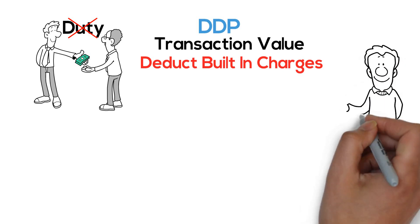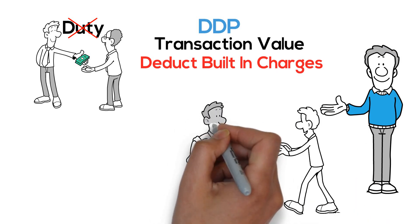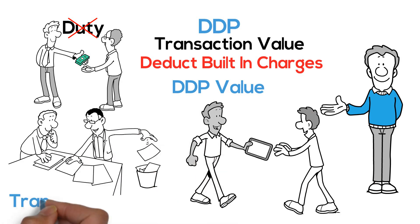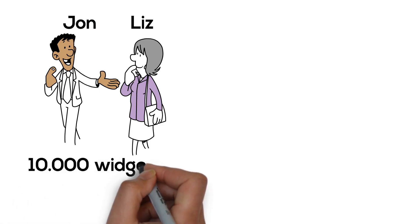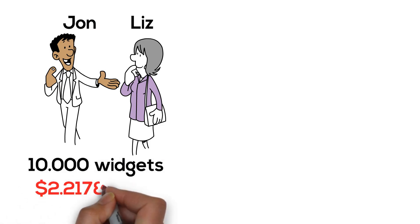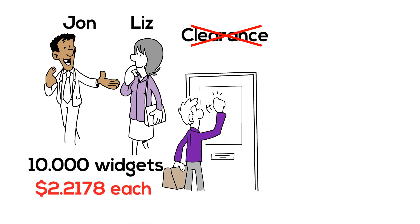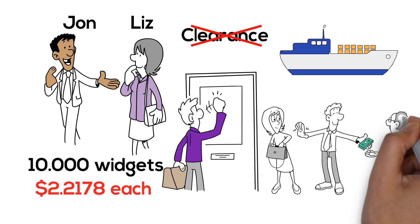Just to give you a simple scenario that will help drive that point home, we're going to look at this from the seller's perspective of calculating what the DDP value is versus how the broker will need to deduct charges to get to the transaction value. So let's use our scenario between John and Liz again — John agrees to sell Liz 10,000 widgets at $2.22 each. Liz decides she doesn't want to deal with arranging the freight or the clearance, so she says ship it DDP and give her an all-in rate to her door.